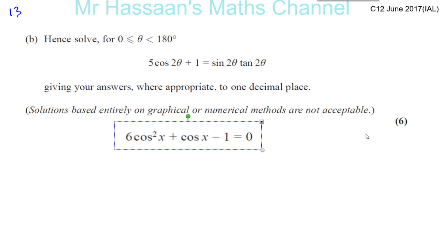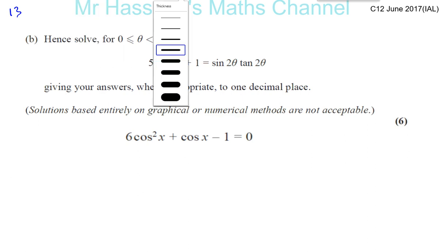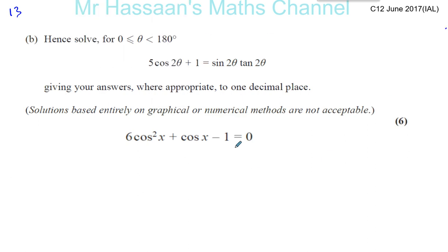Don't just look at part a of a question, think 'I can't do that' and then don't bother looking at the rest of the question. There are six marks here that you could gain without doing part a, because the question already tells you that 5cos(x) + 1 = sin(x)tan(x) becomes this form.